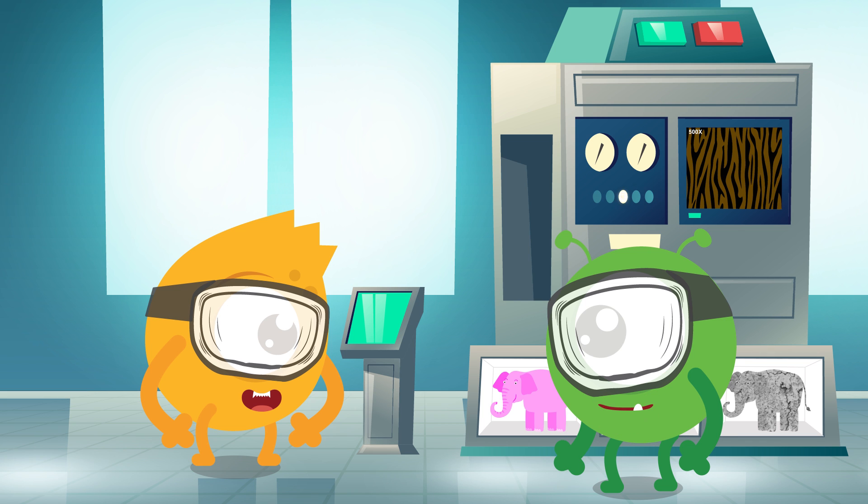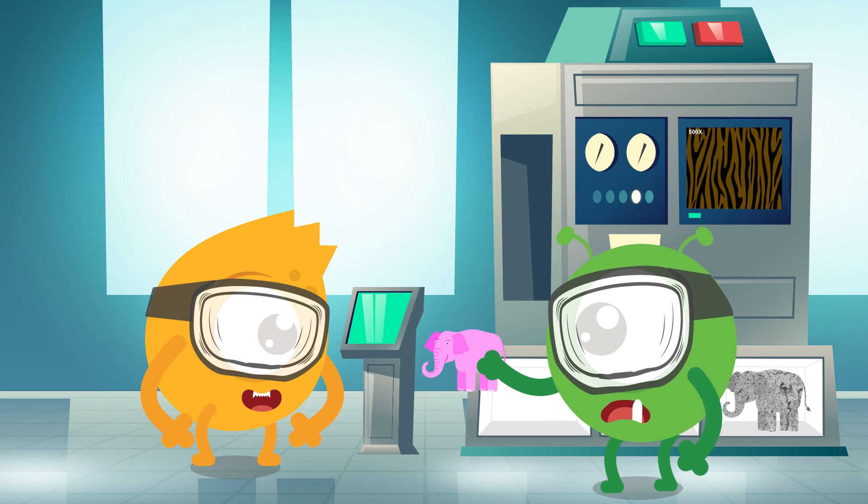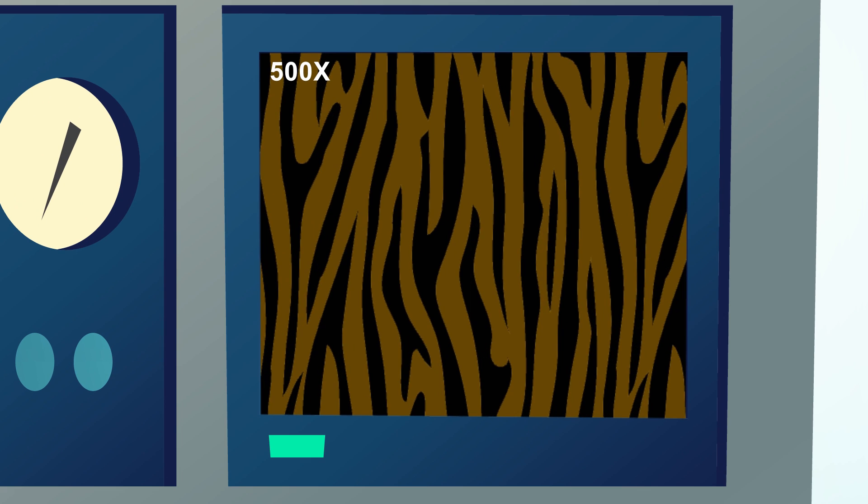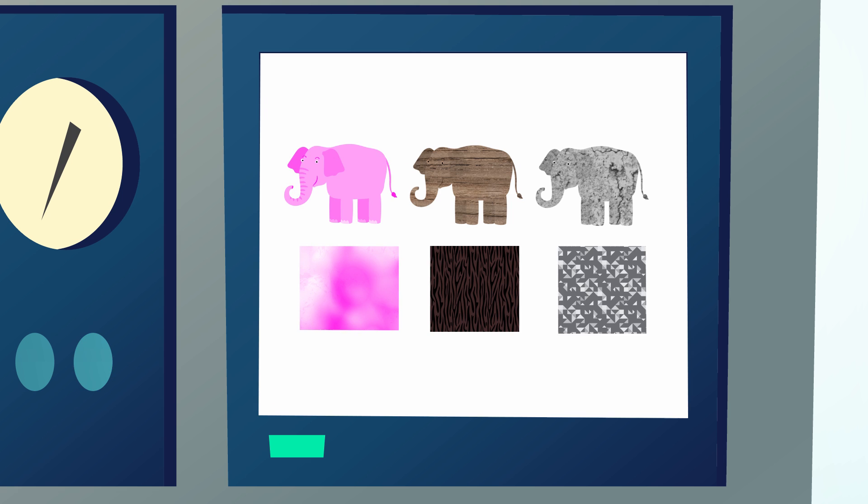What about this pink one? Whoa! It has the same volume as the other two, but it's so much easier to move! And it smells yummy! What's it made of? If you were to look inside, you'd see that the matter is very loosely packed, and there are lots of tiny pockets of air! This one is made of cotton candy! It has the same volume as the other two, but it has much less mass!